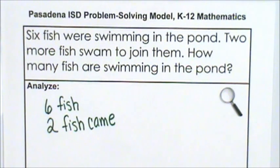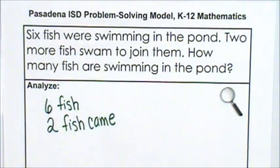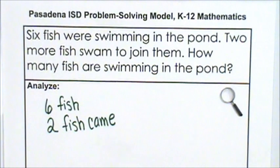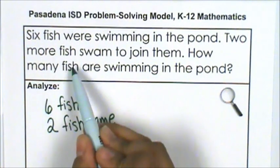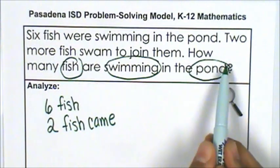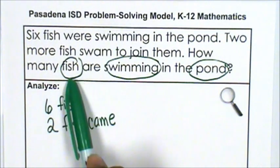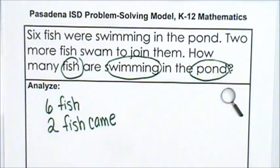What is the problem asking me to find? Hmm. The question says how many fish are swimming in the pond? So I want to know about the fish swimming in the pond. Not at my cousin's house, not jumping, not eating, but fish swimming in the pond. So I want to know all about fish swimming.